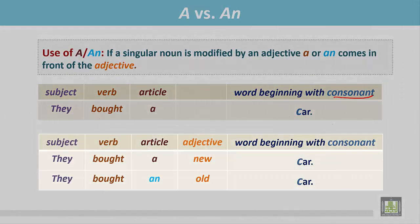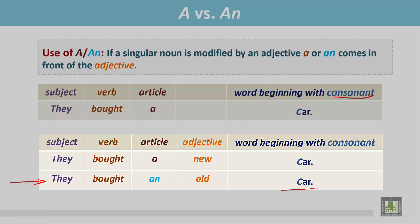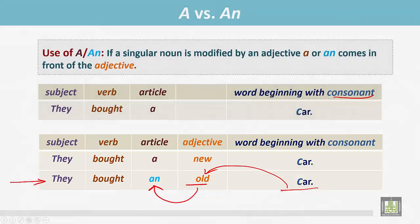More examples: They bought a new car. The word car begins with the consonant C and is modified by the adjective new, which also begins with a consonant. So we place A before the adjective. In the second example: They bought an old car. Here the word car is modified by the adjective old, and the adjective begins with a vowel. So we place AN before the adjective.